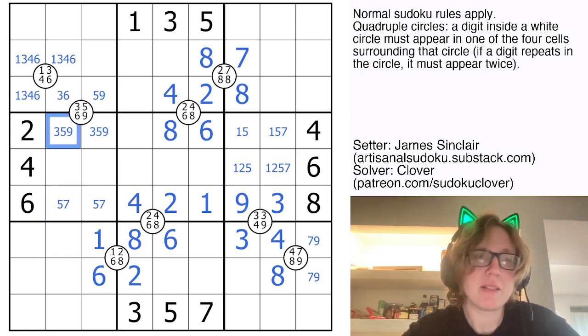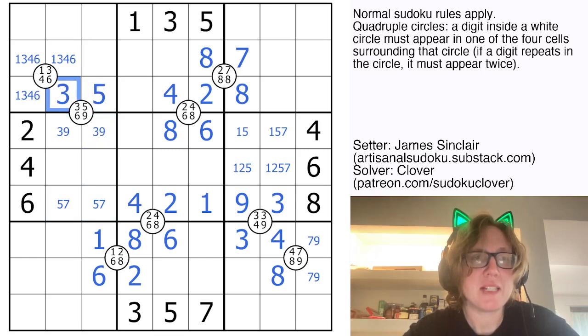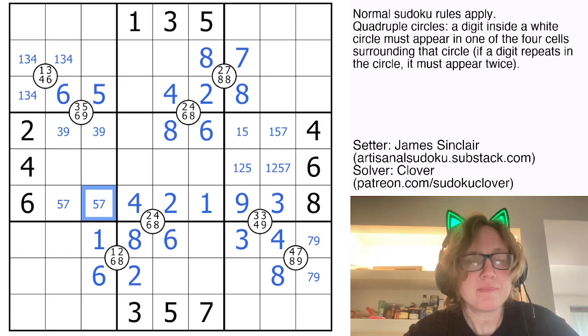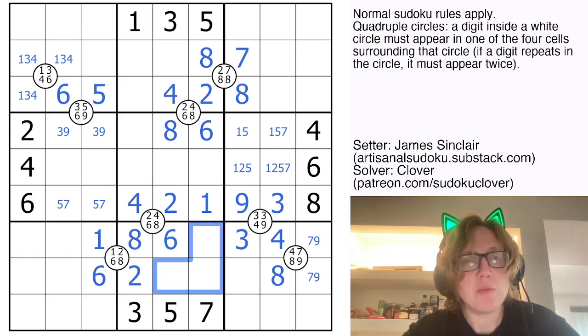That five, seven pair eliminates five from these cells. So this will now be my five, and that will be a six. In this region, I need one, four, and nine. The one eliminates one from those cells, so my one will go right there.